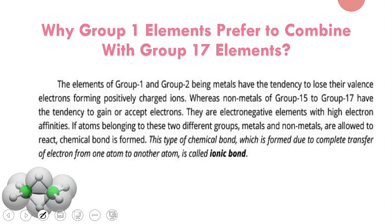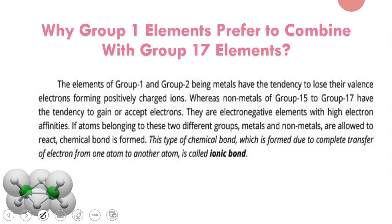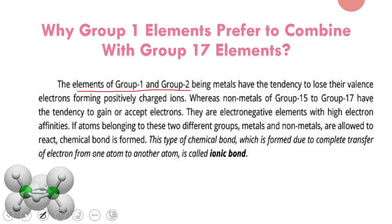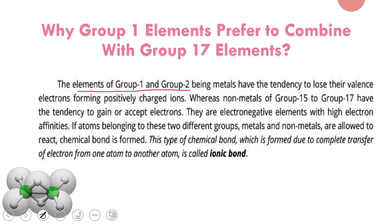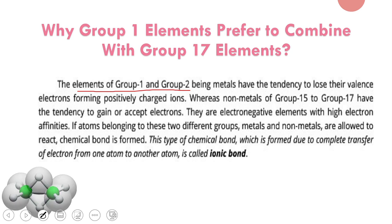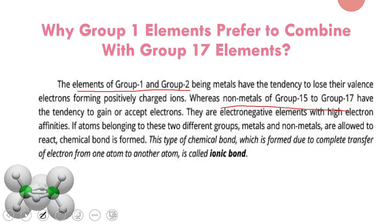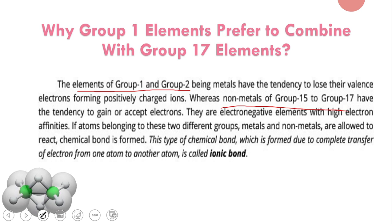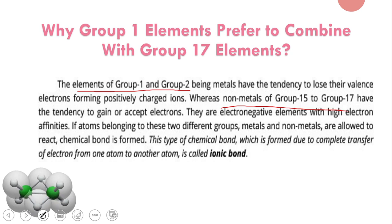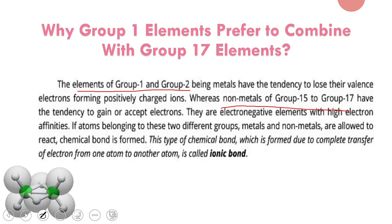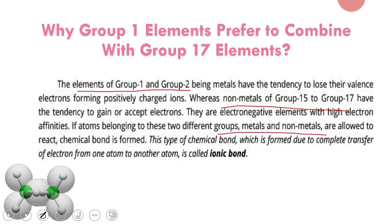Before going further, we have an important short question: why do group one elements prefer to combine with group 17 elements? Group one and group two members are metals — they have the tendency to lose their last electron and form positive ions. Whereas group 15 to 17 members are all non-metals and have the tendency to gain or accept electrons, forming negative ions. When electronegative elements combine with electropositive elements, a chemical bond is formed.